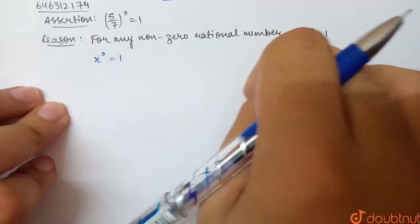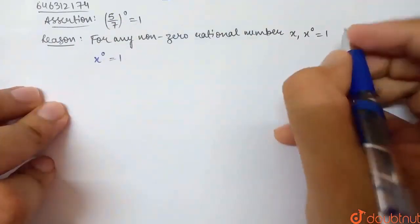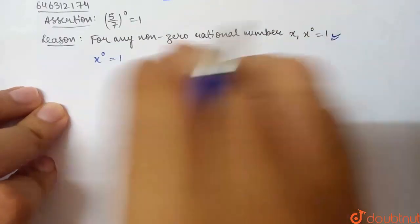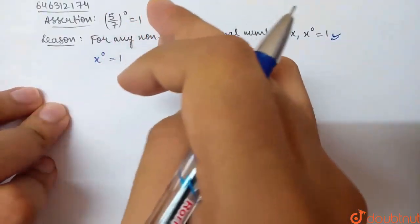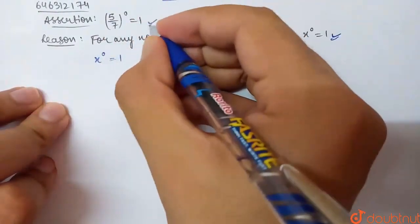For any non-zero rational number x, x to the power 0 is 1. Anything to the power 0 is 1. So this statement is correct. This is also correct. Anything to the power 0 equals 1. We know that this is the actual statement.